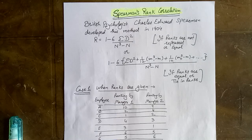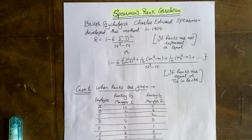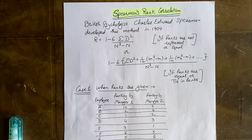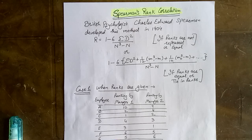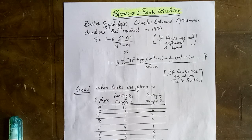But if there is a tie in the ranks, the formula changes to R equals 1 minus 6 times the quantity sigma D-squared plus (1/12)(M1-cubed minus M1) plus (1/12)(M2-cubed minus M2) and so on, all over N-cubed minus N. Here M represents the number of times a repeated rank occurs.